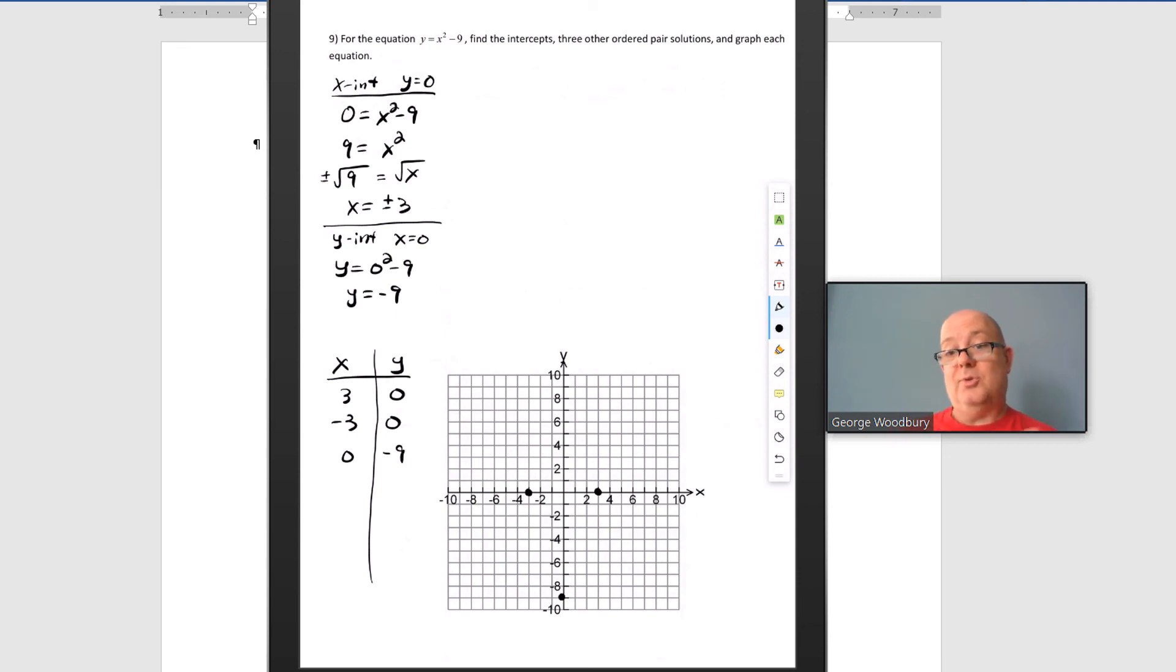So now I can see the pattern of this graph is really different than the first two that we did. But I'm going to pick some points in between negative 3 and 3. Let's start with x equals 1. y equals 1 squared minus 9, 1 minus 9 is negative 8. That's right here. Let's try 2. x equals 2, y equals 2 squared minus 9. That's 4 minus 9 or negative 5. So 2, negative 5.